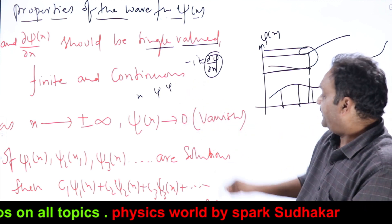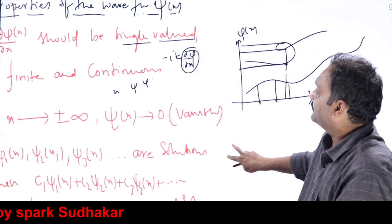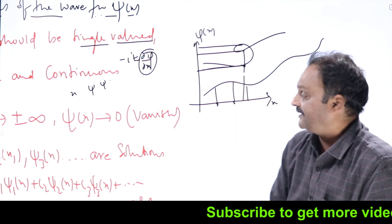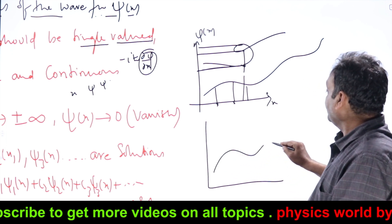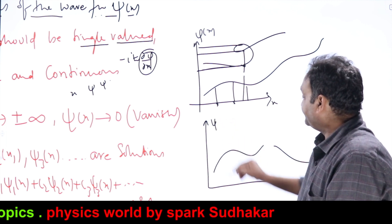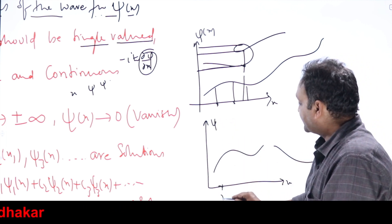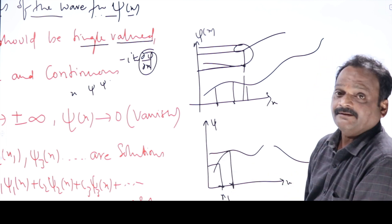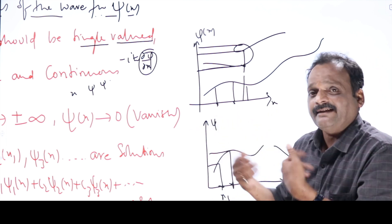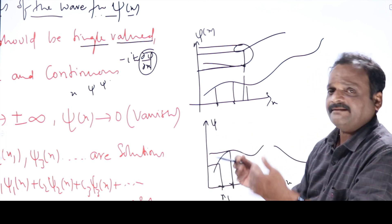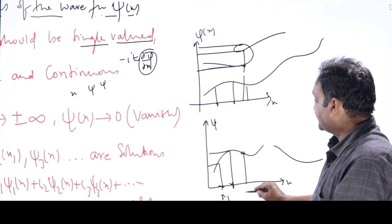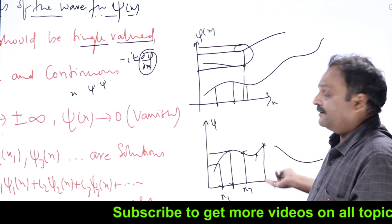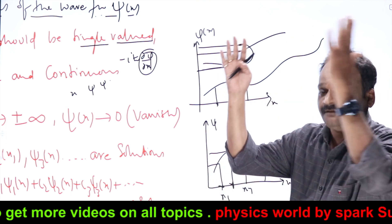Psi should also be continuous — continuity of the wave function is an important aspect. If the function is continuous, at x1 I can read off psi(x1), at x2 I get psi(x2), and from these values I can compute momentum and kinetic energy — single, finite values. Up to a given point, I know psi perfectly. The first postulate says: once you know psi, you have the entire information about the system.